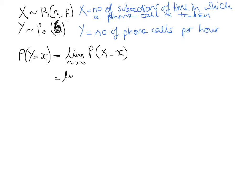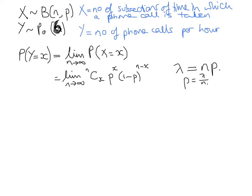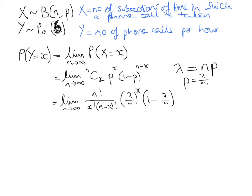The probability that y equals something is going to be the same as the limit as n tends to infinity of the probability that x equals that thing, where x is binomial and y is Poisson. So if we take the binomial and take n to infinity, we'll get the Poisson. The binomial formula is: limit n→∞ of n-choose-x times p to the x times (1−p) to the (n−x). Now p — well, the Poisson distribution has average λ, and the mean for a binomial is np, so p is λ/n. I can substitute that in: n factorial over x factorial times (n−x) factorial, times (λ/n) to the x, times (1 − λ/n) to the (n−x).